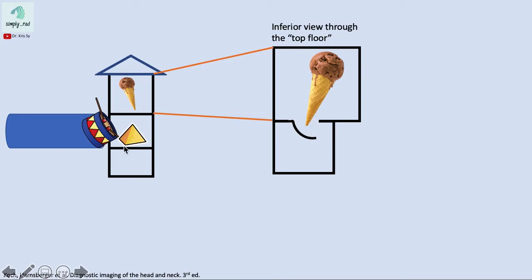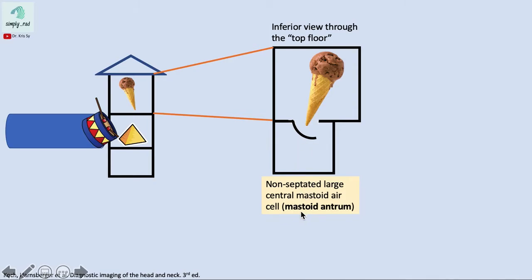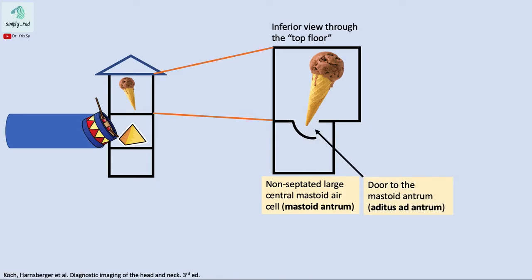Going back to our three-story building drawing, focusing on the topmost floor, we see an important resident: the ice cream cone. Looking inferiorly at this topmost floor, we see an ice cream and cone appearance. Notice that the apex of the cone points through a door — this door opens to another room called the mastoid antrum, which is the non-septated large central mastoid air cell. This door to the mastoid antrum is the aditus ad antrum.